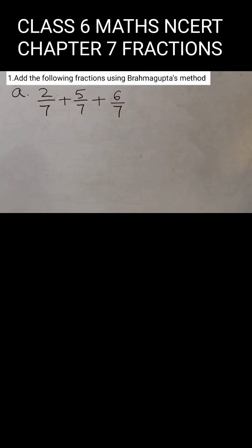Add the following fractions using Brahmagupta's method: 2/7 + 5/7 + 6/7. Now, here you see all the denominators are the same: 7, 7, 7. So, just add up the numerators and keep the denominator as it is.